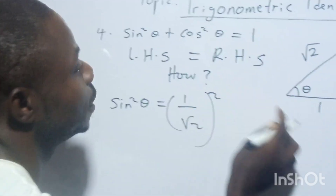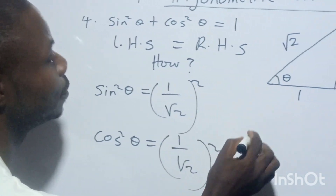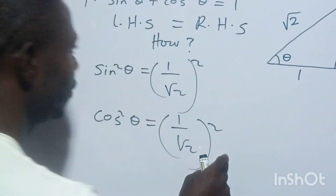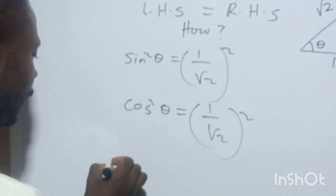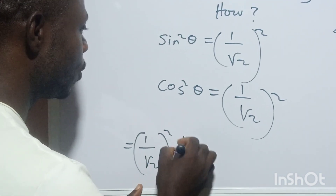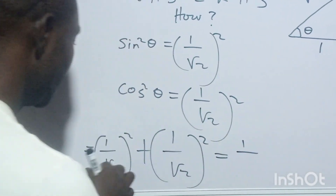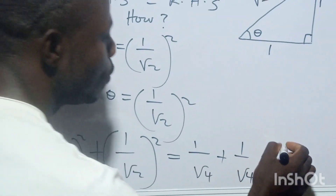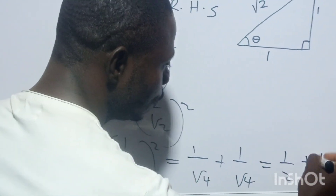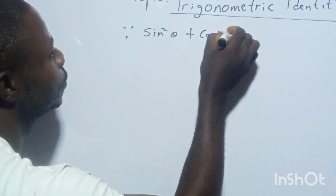Sine squared θ equals opposite over hypotenuse, squared. Then cos squared θ equals adjacent over hypotenuse, squared. So this plus this will give you one. We have one over the hypotenuse squared. Using the 45° triangle — where the sides are 1, 1, and √2 according to Pythagoras' rule — one over two plus one over two gives you one. So therefore, sin²θ + cos²θ equals one. Did you see that?